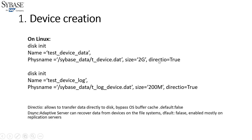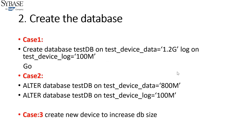By default, `direct_io` and `desync` are both false. Setting `direct_io` to true transfers data directly to disk, bypassing OS buffers, which provides faster data access. The `desync` parameter, if enabled to true, allows data recovery from devices on those file systems, but it causes high write overhead and performance drops. So we generally leave `desync` as false; it is typically enabled only for replication servers.